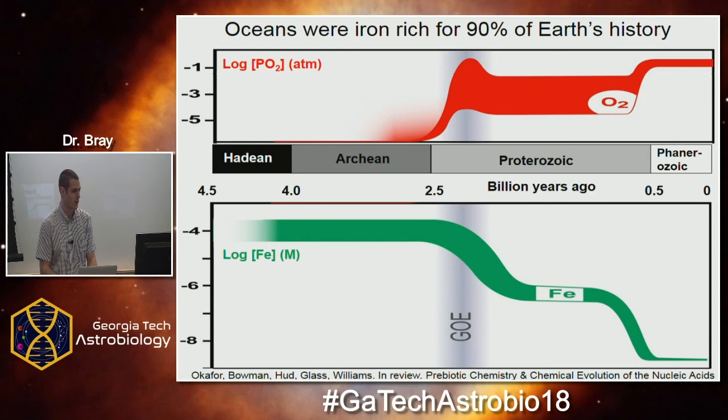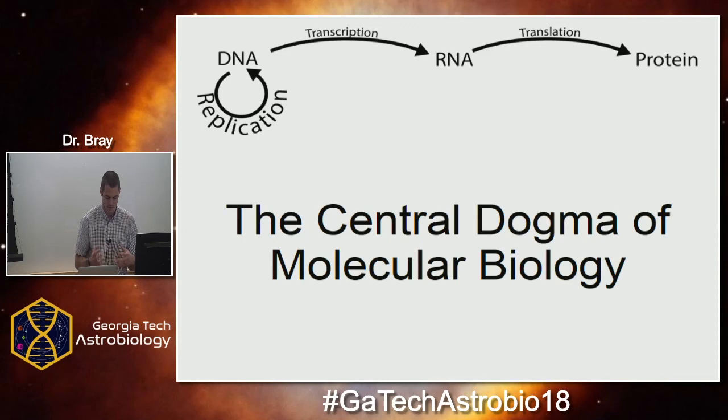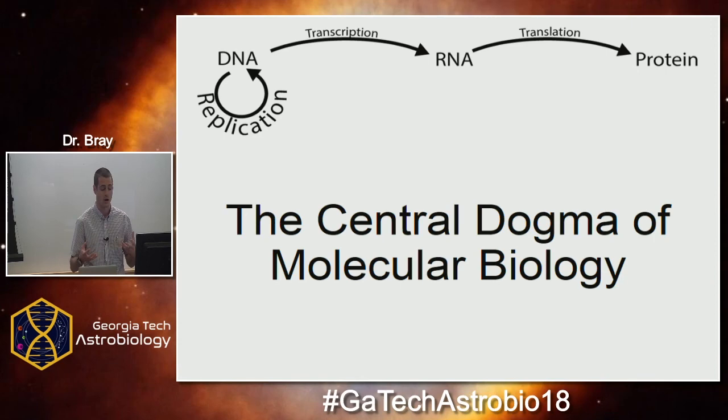Life evolved between four and three billion years ago, with major biochemical functions and systems preceding that. My advisor likes to say that life evolved behind an iron curtain. Thinking about the central dogma of molecular biology: DNA is replicated, transcribed into RNA, and RNA is subsequently translated into protein.